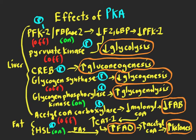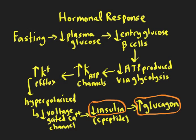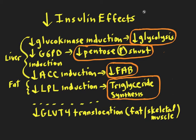At the same time, we also have decreased insulin, which has its own significance. Glucagon's effects are through its Gs-coupled receptor, but we also need to consider what happens with less insulin. One thing insulin does in the liver is induce glucokinase — the first step of glycolysis. With less insulin, there's less glucokinase induction, less glucose entering the liver, and glycolysis is turned off — which is appropriate because we want glucose to go out of the liver, not into it.